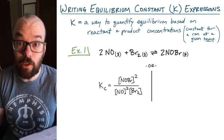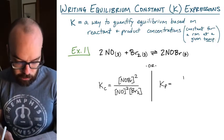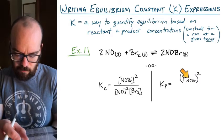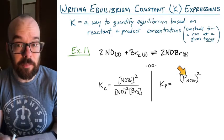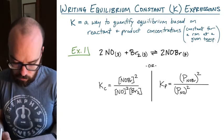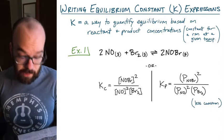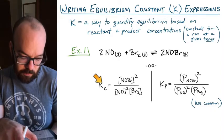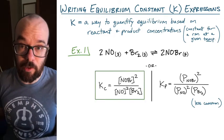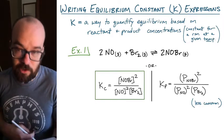Both are a way to quantify the equilibrium of this reaction. Written in terms of partial pressures: Kp equals the partial pressure of NOBr squared, following the same pattern as before — product raised to the power of its coefficient — divided by the partial pressure of NO squared times the partial pressure of Br₂ to the power of one. The Kp expression is less common; more often we work in concentrations, but we can use partial pressures when that fits better.